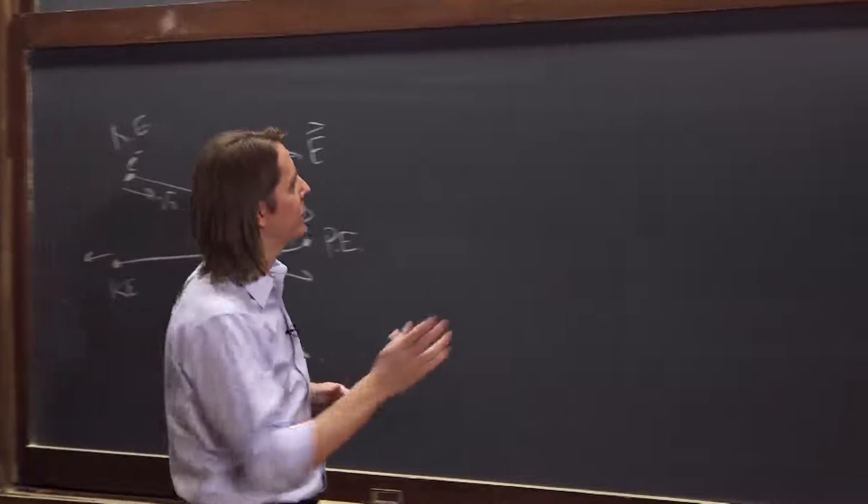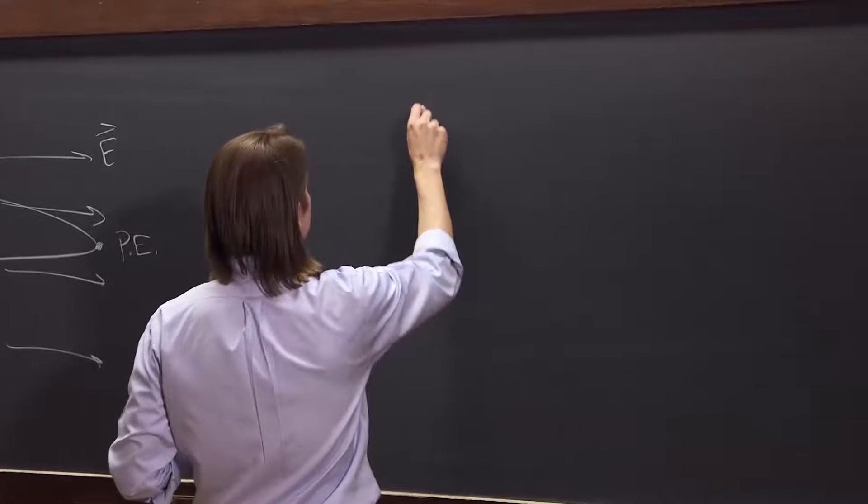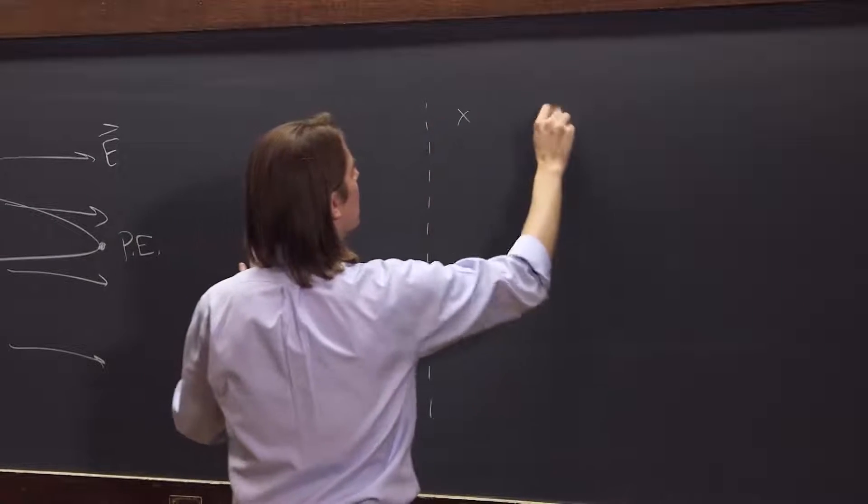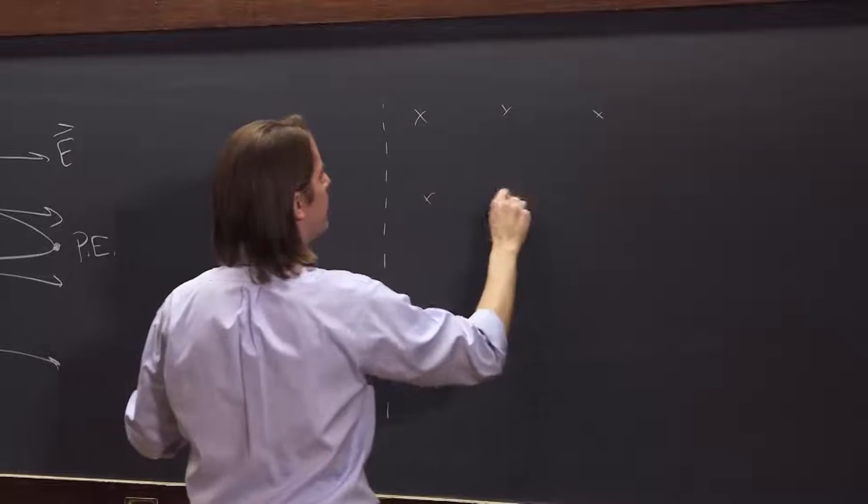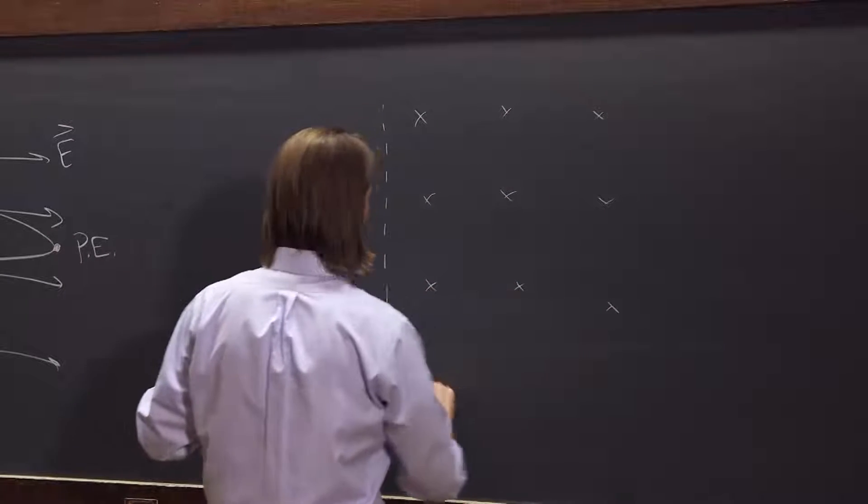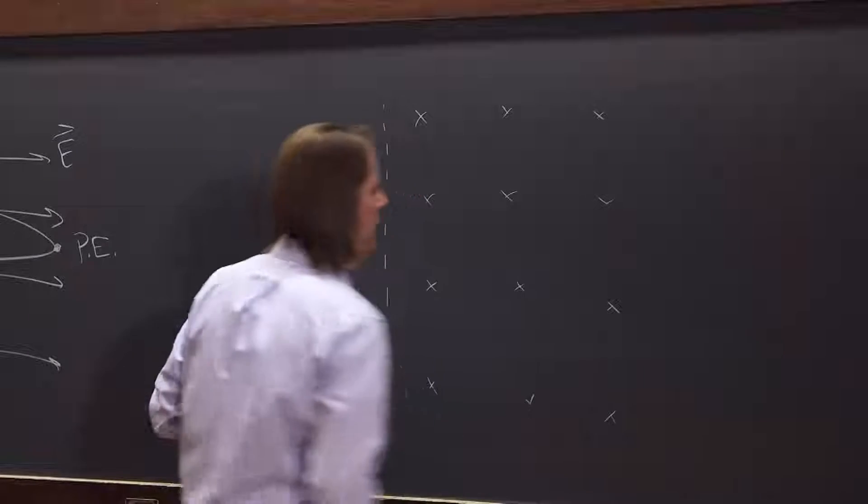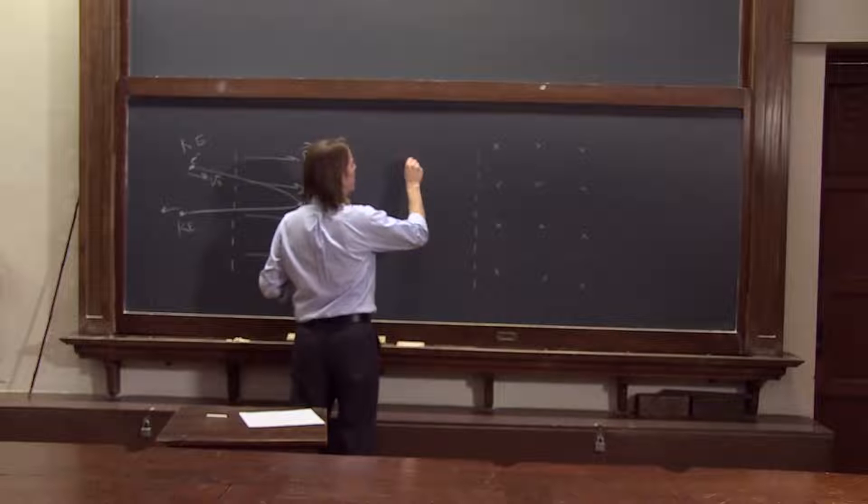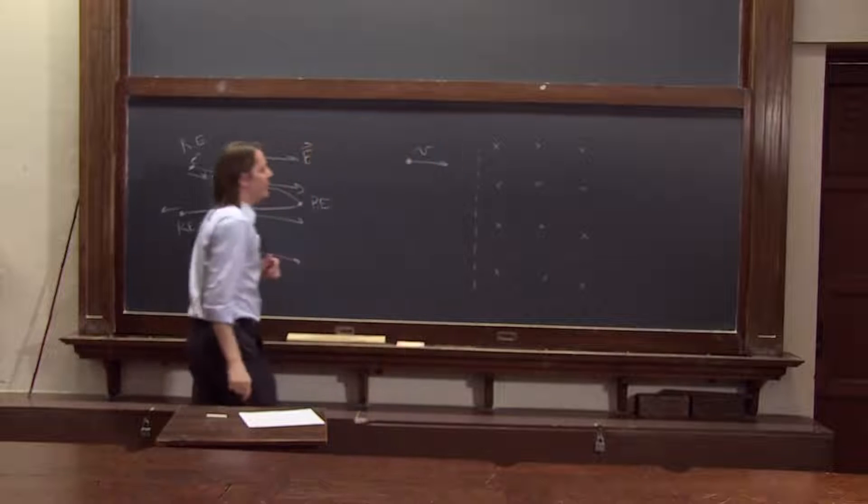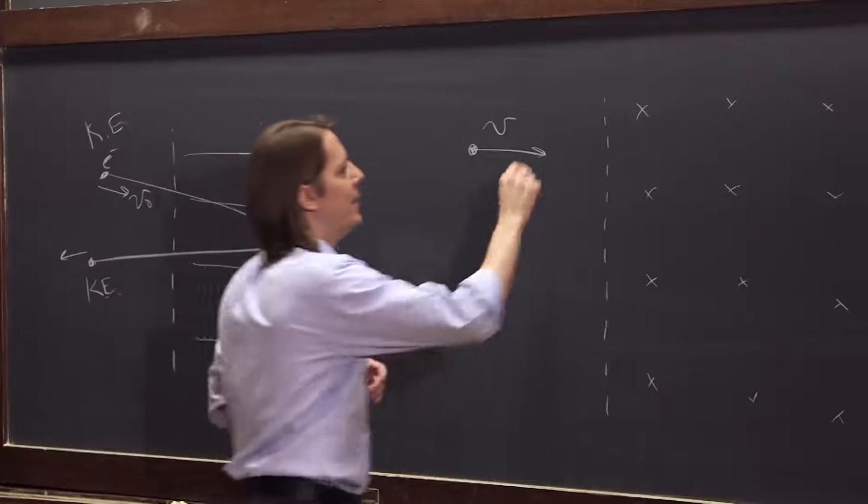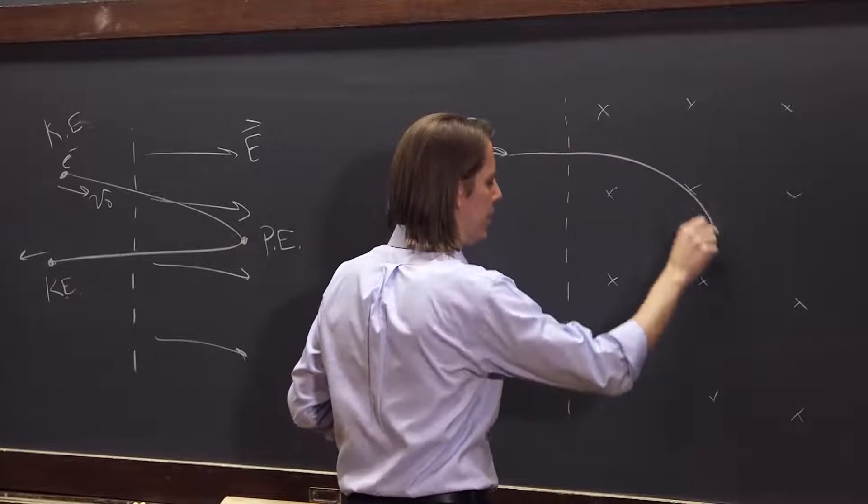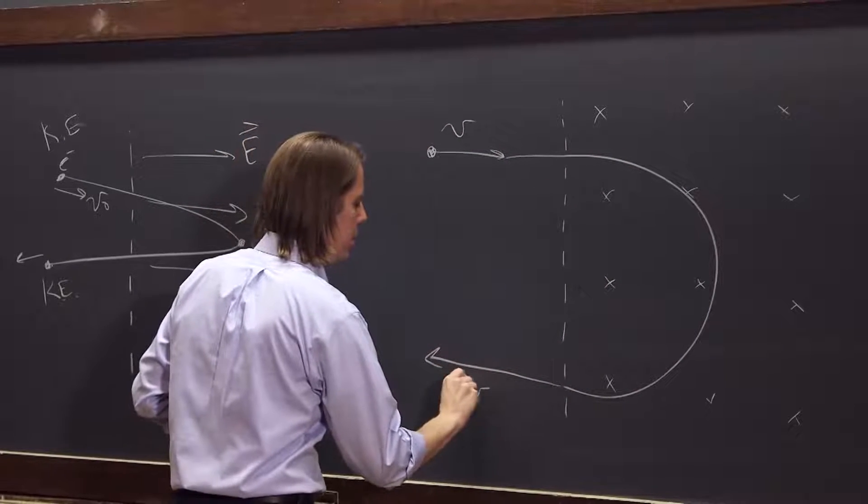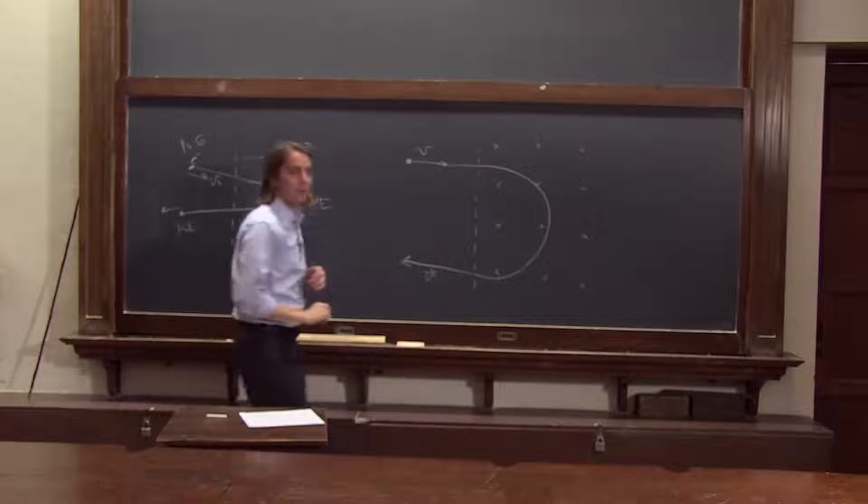Let's look at a similar situation with the B field. So here we have a region where you have a B field pointing into the board. Like that. And it looks kind of similar. Let's have a particle with some velocity fly into the B field. And we've already talked about what's going to happen. It'll follow a circular path and come out with some velocity, with the same velocity, actually.